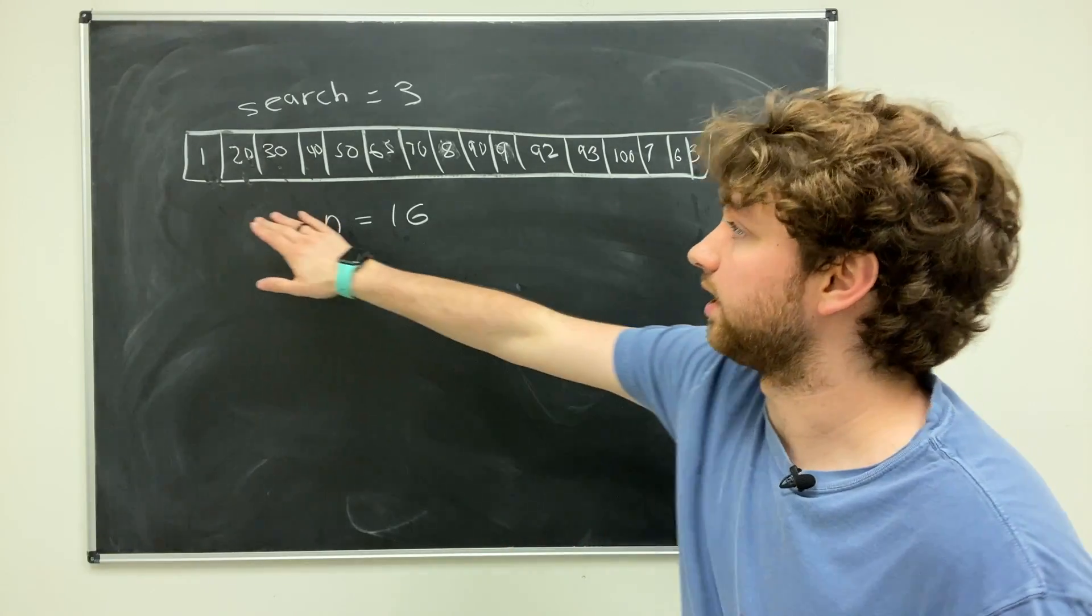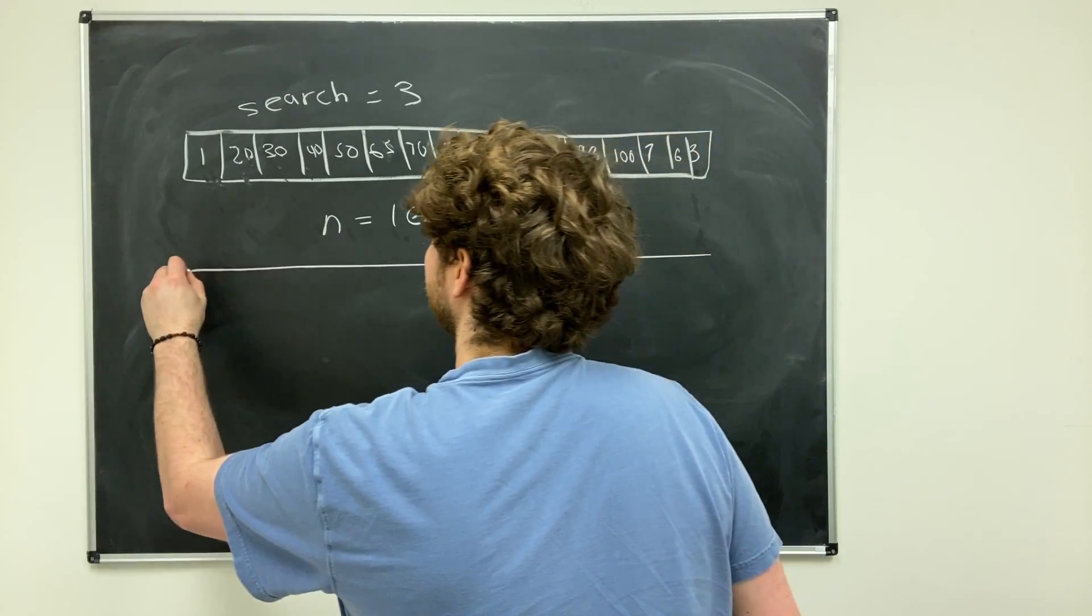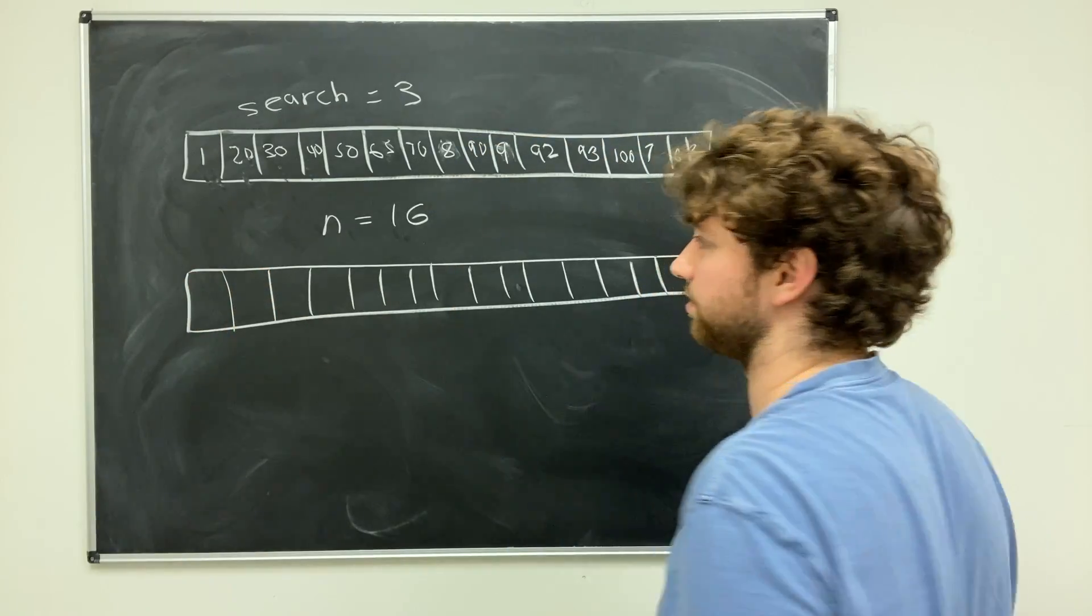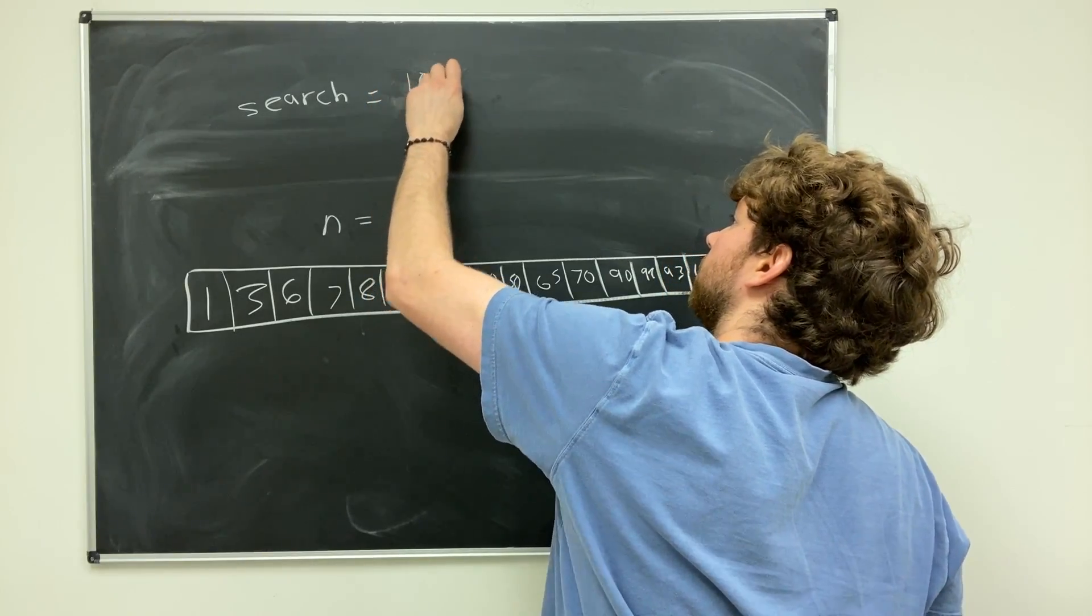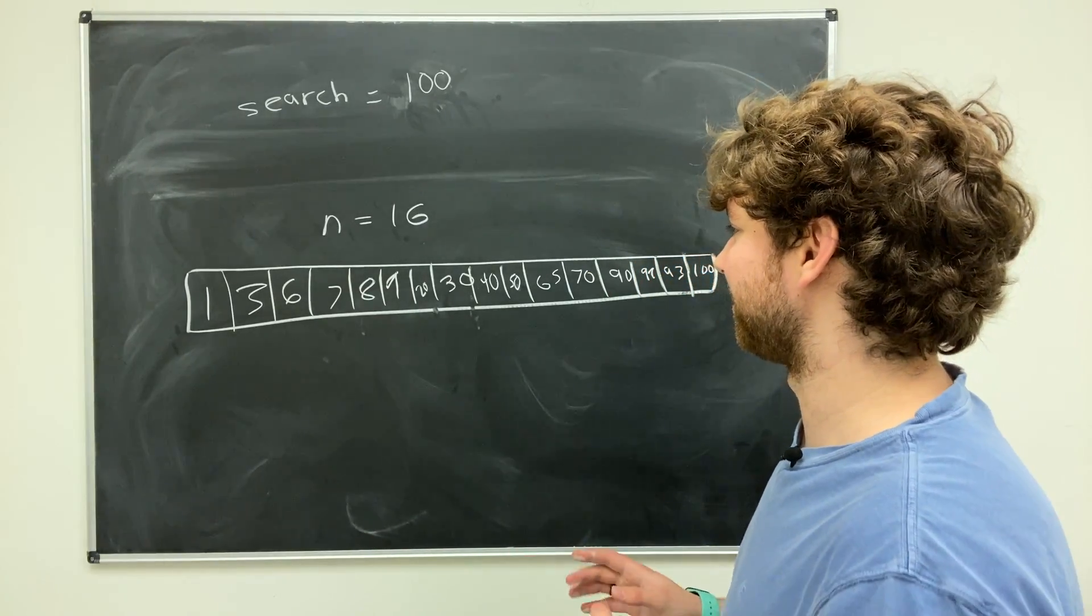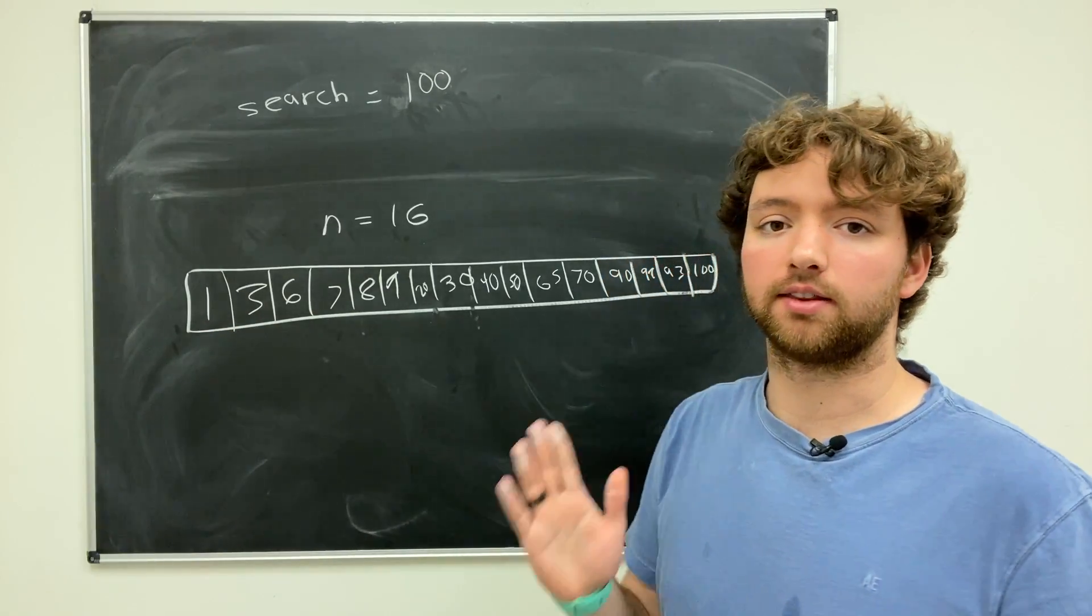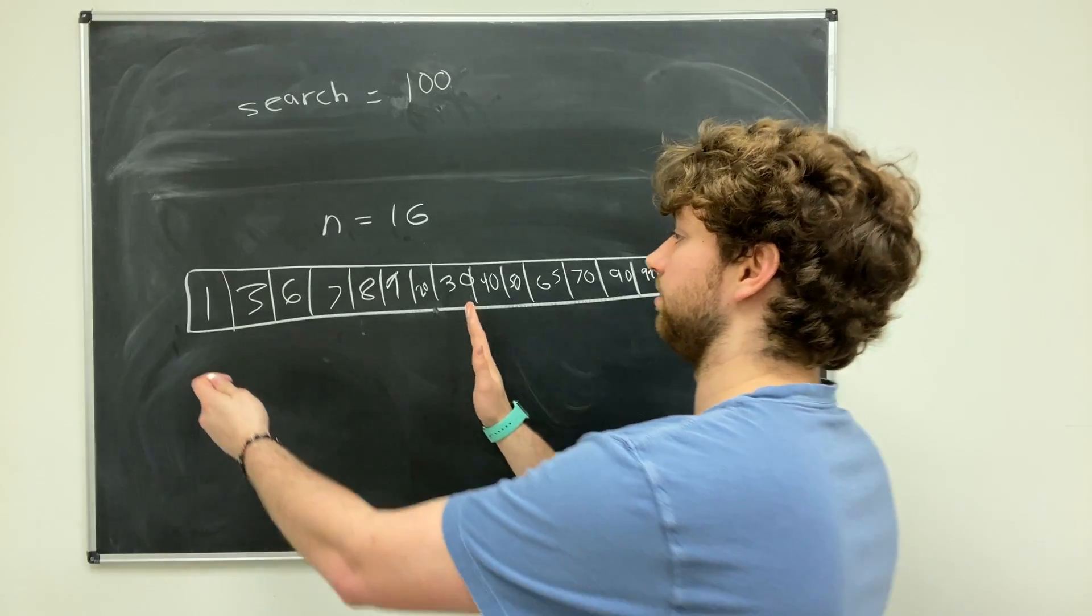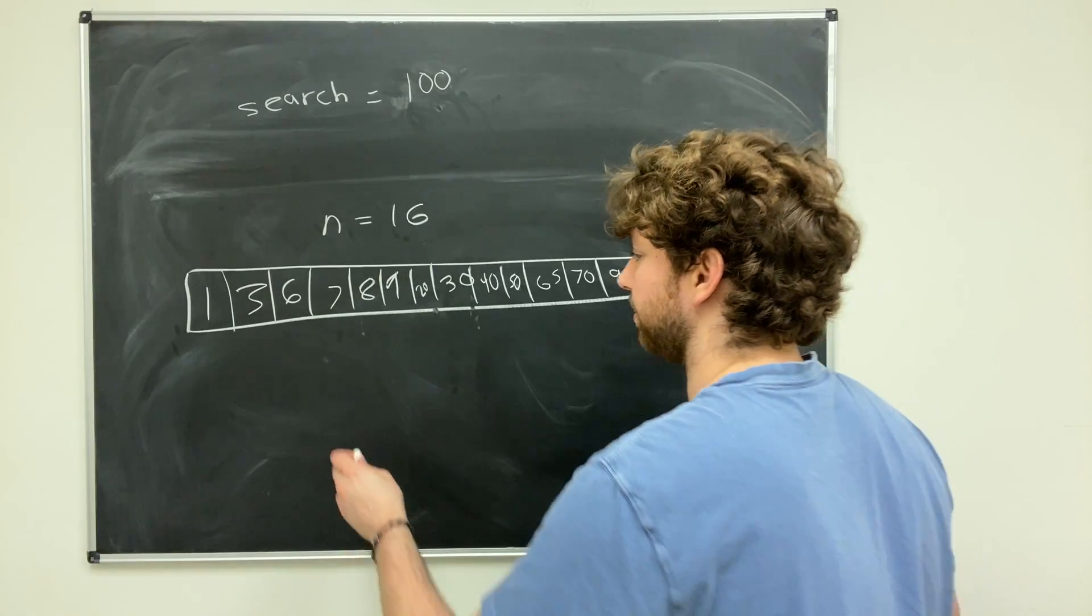Let's say instead of having this array here, we have a sorted array. So I'm going to redraw this array. Now instead of three, we're going to search for 100. I mean, three would still work, but 100 is going to show my example a little bit better here. So for this, instead of starting at the left and just going through, we're actually going to start at the middle. So we're pretty much going to split the data in half. The left side being the tiny numbers and the right side being the larger numbers. And this is known as a binary search algorithm.